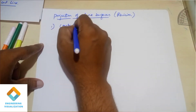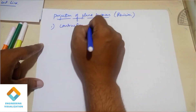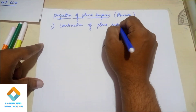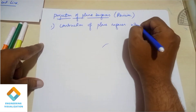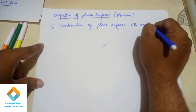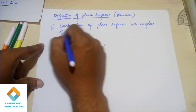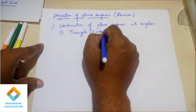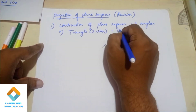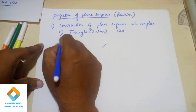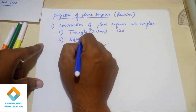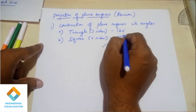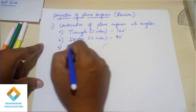Plane surfaces - this is very important revision. First important point is projection of planes and construction. 50% of problems are easy. First, triangle has 3 sides - use the angle method with 120 degrees to construct it. Next, square has 4 sides, so use 90 degree angle to construct the square.